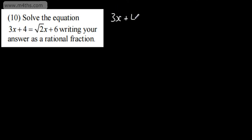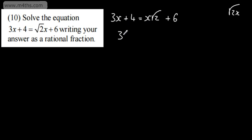In question 10 here, we're asked to solve the equation 3x plus 4 is equal to root 2 times x plus 6, and it says write your answer as a rational fraction. This isn't root 2x, so the x is outside. I'll rewrite this as 3x plus 4 is equal to x root 2, which is just easier in terms of notation so we don't think that this is the root of 2x — the x isn't under the root. So I'm going to subtract 4 from both sides and show workings: we've got 3x is going to be equal to x root 2 plus 2.